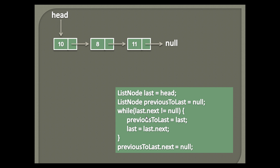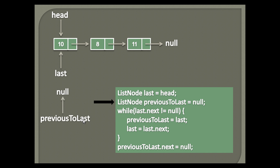Let's see the working of it through a demo. First we create a temporary list node variable by name 'last' and point it to head. Next, we create a temporary list node variable by name 'previous to last' and assign a value null to it.